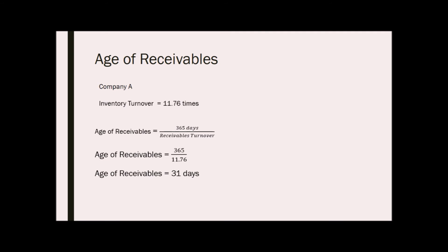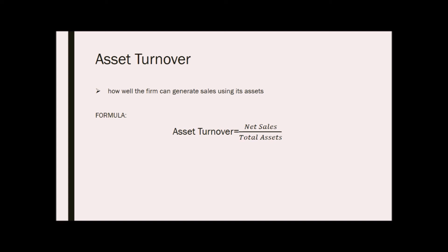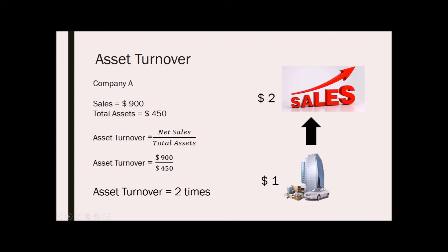Lastly, we have asset turnover. Asset turnover measures the overall efficiency of a company in generating sales using its assets. The formula is similar to ROA except that net sales is used instead of net income — that is net sales over total assets. For example, Company A has sales of $900 and total assets of $450. Dividing $900 by $450 gives a total asset turnover of 2 times. This means that for every $1 worth of asset, the company was able to generate sales worth $2. High asset turnover ratios are a positive indicator that the company is utilizing its assets efficiently to produce sales — the higher the ratio, the more sales the company is generating from its assets.